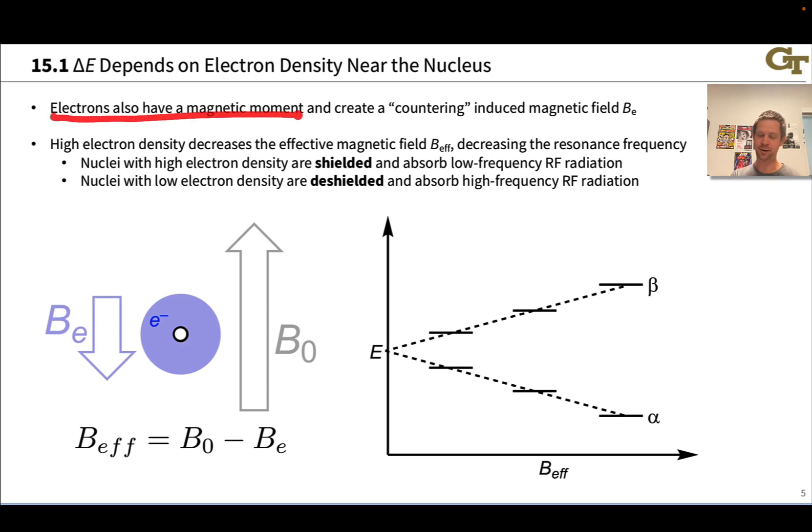The beauty of NMR is that the electron density around a proton affects its precession frequency because electrons also have a magnetic moment and they do something that's sort of Le Chatelier's principle-esque. When we apply an external magnetic field to the electron, it moves to create a countering magnetic field we could call Bₑ. What the nucleus actually feels is the difference between that external magnetic field and the electron's countering magnetic field. The greater the electron density around the nucleus, the smaller the effective field felt by the nucleus.